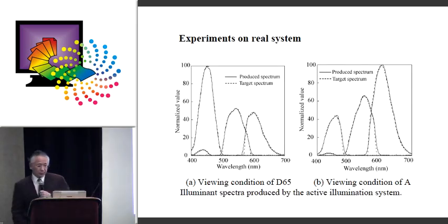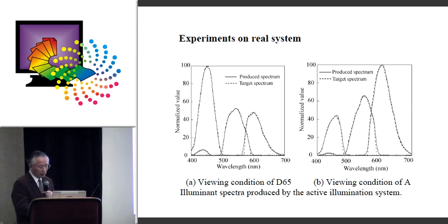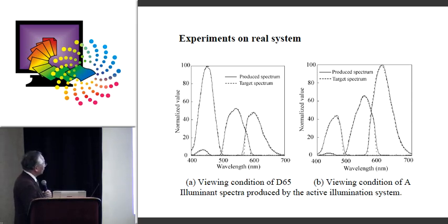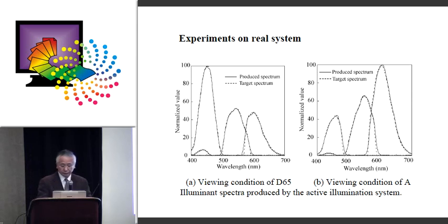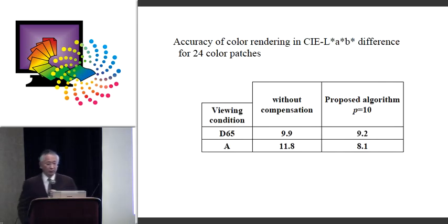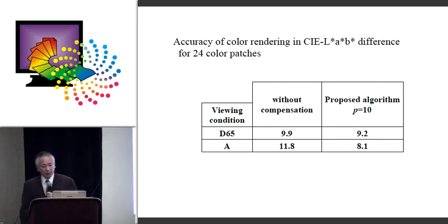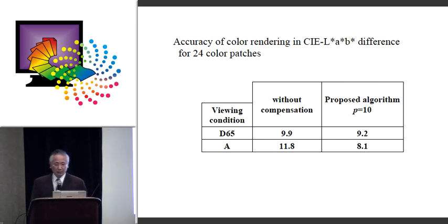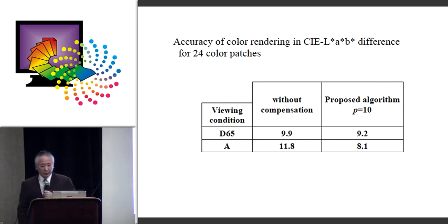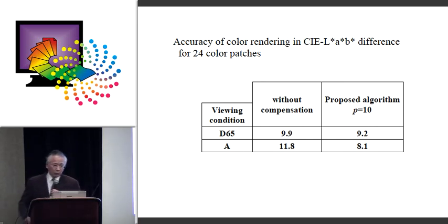This image shows the variable spectrum produced by the active imaging system under green illumination conditions and under D65. This shows the accuracy — we examined the color difference accuracy using the Macbeth color checker. The average value of color difference within 24 color patches shows that the proposed algorithm helps improve the color difference, especially for the K channel.